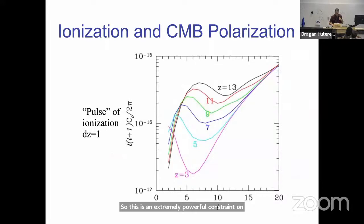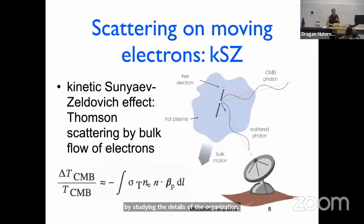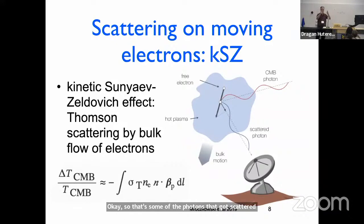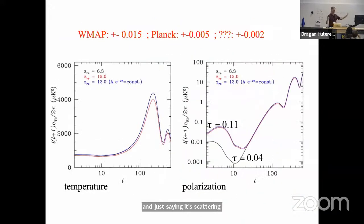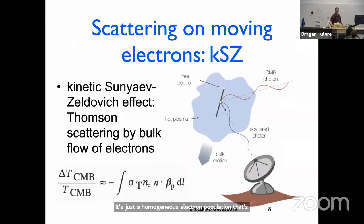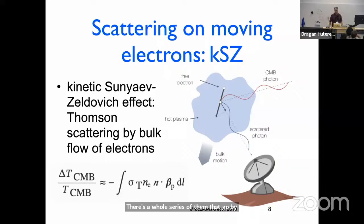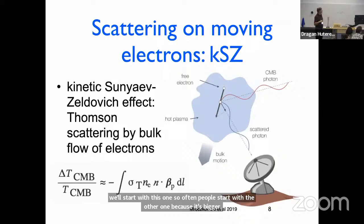In principle, we could actually learn more by studying the details of the reionization bump, but that's going to be hard. That's some of the photons that got scattered out of or into the beam from the diffuse medium — taking no fluctuations in the universe at all and just saying it's scattering some fluctuating quadrupole. What causes the reionization bump is a homogeneous electron population scattering the anisotropic temperature field. Another thing that is scattering of the CMB is a whole series of effects that go by the name of the Sunyaev–Zel'dovich effects.